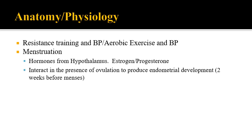Looking at the reproductive system and the menstrual cycle in females: it is modified by hormones from the hypothalamus, particularly estrogen and progesterone, which regulate ovulation and endometrial development. Endometrial development usually happens two weeks before menses. If pregnancy doesn't occur and hormone levels decrease, the endometrium gets expelled and the cycle starts over again.